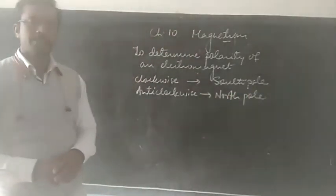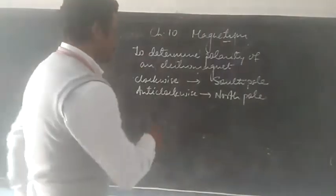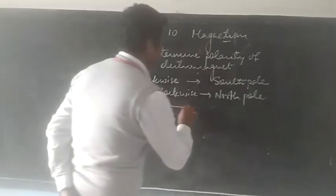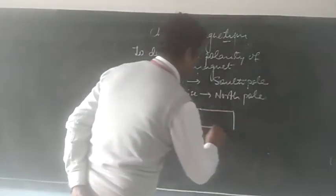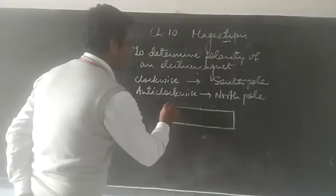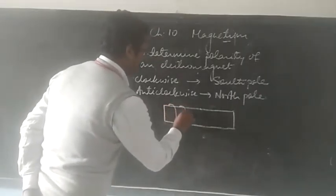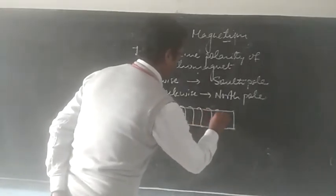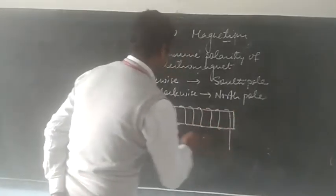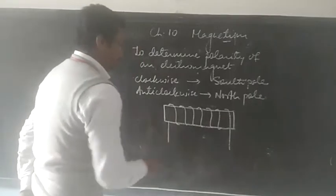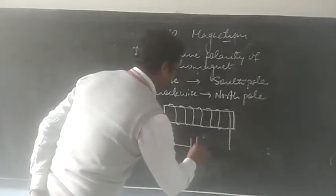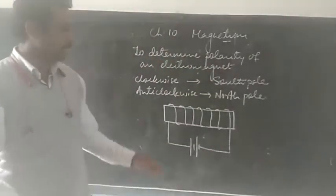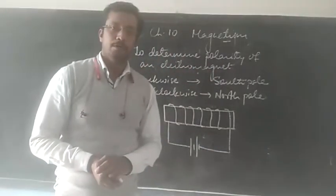Let us try to understand this with the help of a simple experiment. Suppose we have an electromagnet where these are the number of turns of the coil, and let us suppose the two ends of the wire have been connected to the two terminals of the coil.